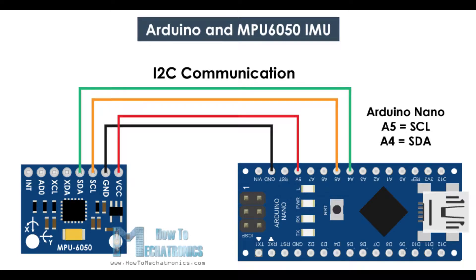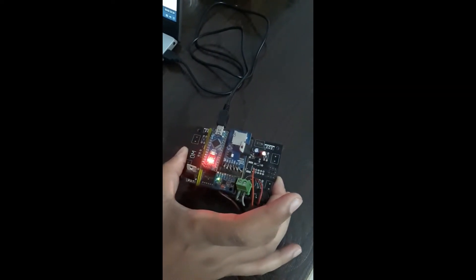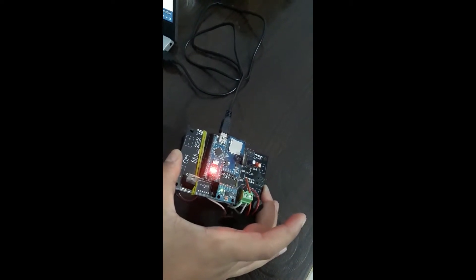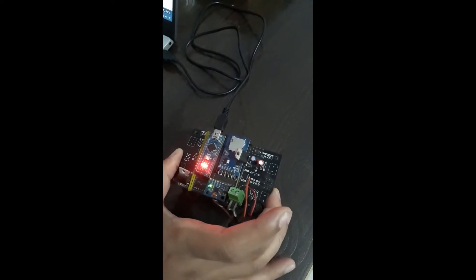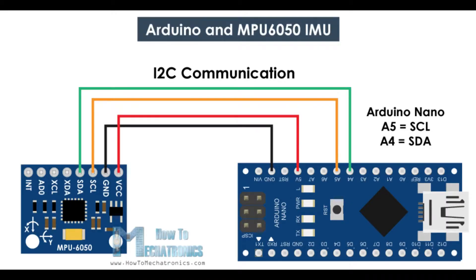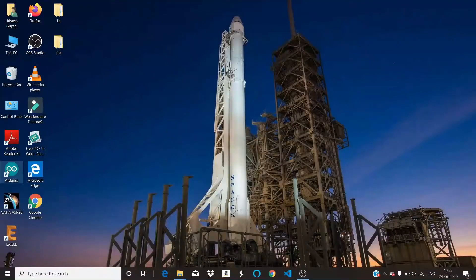I won't talk much about the hardware part — if you want to read more you can go to the links given in the description. Now we will code our Arduino to get the values from the MPU-6050. There are a lot of libraries available but the problem with other libraries is that there is a lot of drift in the sensor, and when the rocket is up in the air the drift is too high and values change very rapidly. So what we will do is use Kalman filters. Kalman filters and complementary filters are used to filter the values and make them more smooth and stable.